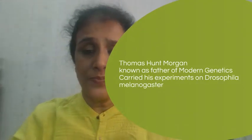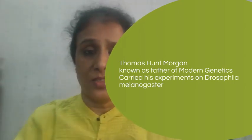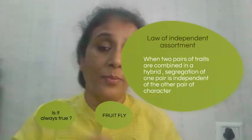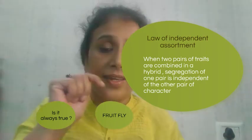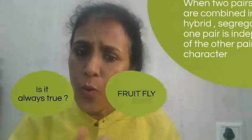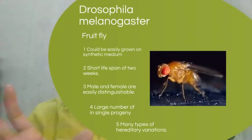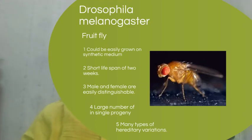Is it always true? Thomas Hunt Morgan, who is also known as the father of modern genetics, carried out his experiments on Drosophila melanogaster, also known as the fruit fly. Why did he select Drosophila melanogaster? It is a very good material for genetic studies because it can be easily grown in synthetic medium — you just mash a banana and you can easily cultivate them.